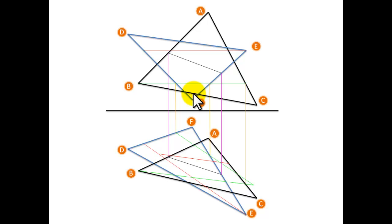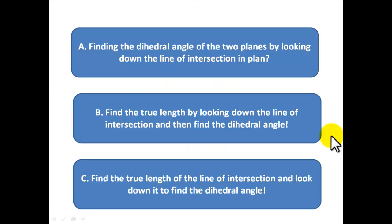The second part of this question is to find the dihedral angle between the two planes. I want you to think about how we are going to solve this. We need to find the dihedral angle, so click on the link you think is correct. Is it A: find the dihedral angle of the two planes by looking down the line of intersection in plan? B: find a true length by looking down the line of intersection and then find the dihedral angle? Or C: find a true length of the line of intersection and look down it to find the dihedral angle? Take a second and click the correct link.